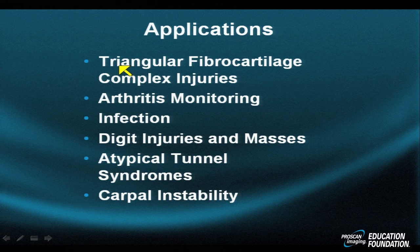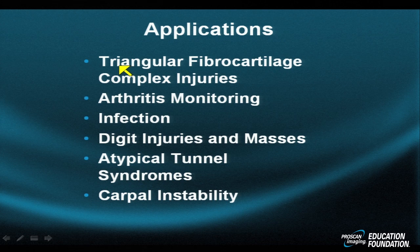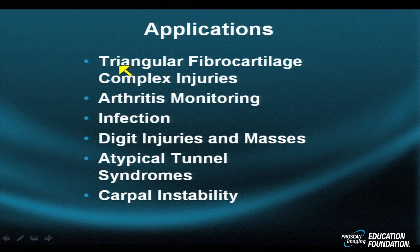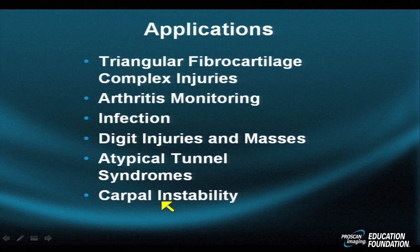MR does a fantastic job identifying aggressive intra-articular processes. For digit injuries and masses, MR is used primarily to assess injuries to the pulley mechanisms and the flexor tendon mechanism — to see the level of retraction of the flexor unit. For tunnel syndromes, while EMG and clinical evaluation reign supreme, sometimes the diagnosis is ill-defined, perhaps due to a secondary process such as an aneurysm in Guyon's canal producing an ulnar nerve palsy, or a bifid median nerve with an anomalous vessel producing secondary compression.